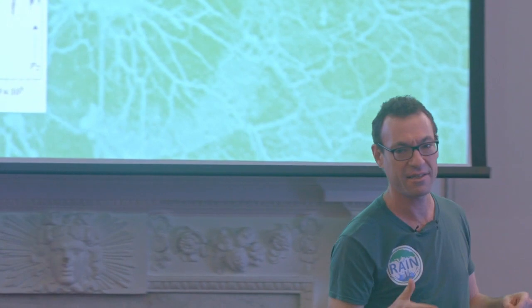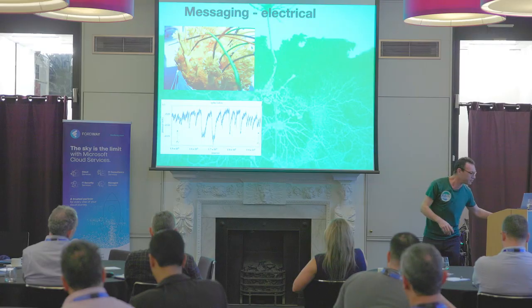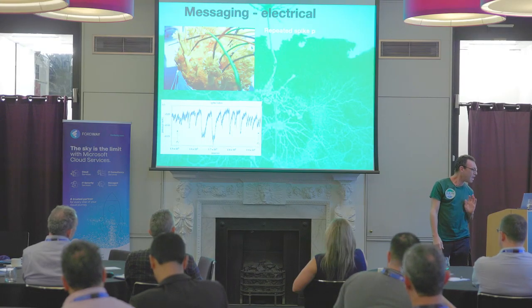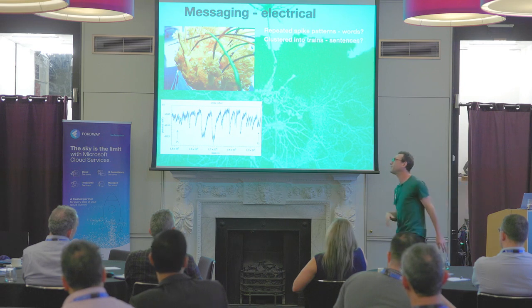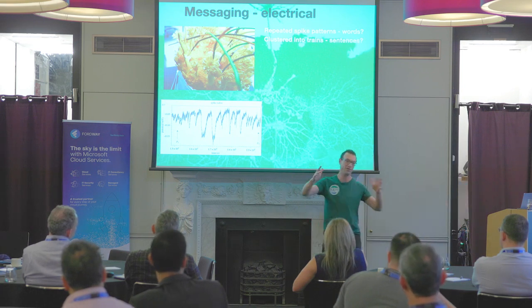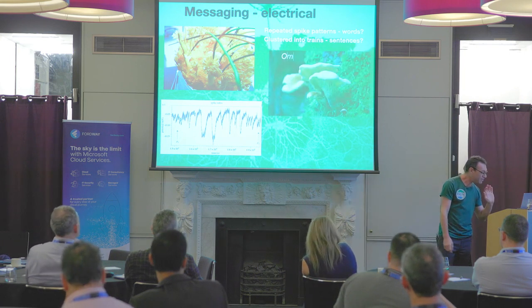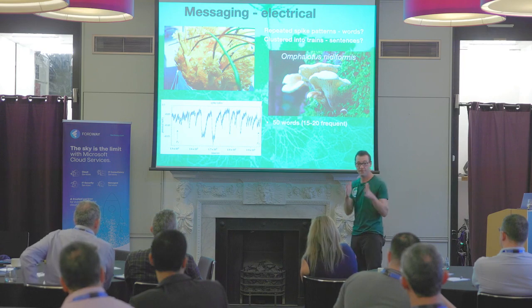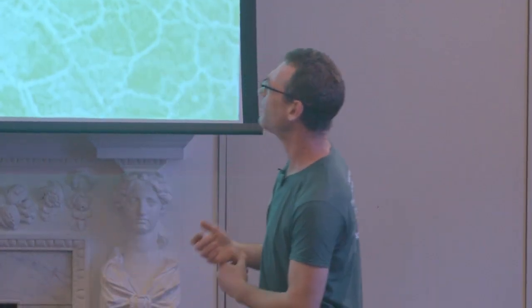It's incredible — they communicate in a rather similar way to how our brain cells communicate, with specific patterns of electrical charge moving down these filaments. You can make an analogy there with words; in fact, they cluster their words into something that looks very much like sentences. Oyster mushrooms, for example, have about 50 words they use — 50 specific spike patterns — but most conversations involve only 15 to 20 of them. If you're familiar with the 80-20 law, 20% of things get used 80% of the time. In a language like English, the word 'the' is used a whole lot more than the word 'xylophone'.